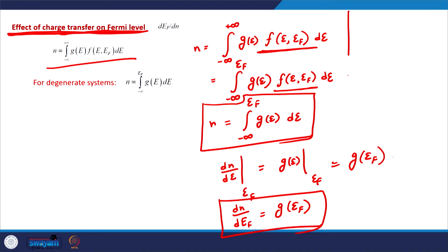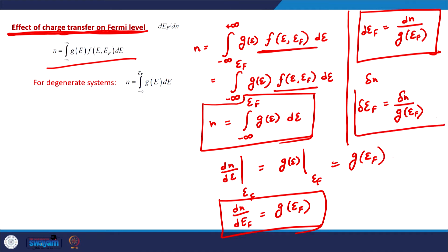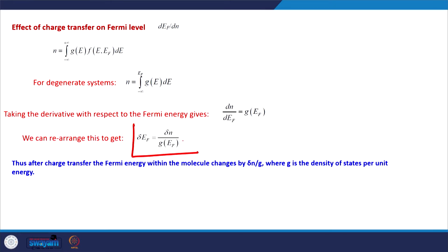This means δEF = δN × 1/G(EF): if there is a transfer of δN electrons from the contact to the molecule, the change in the Fermi level δEF = δN / G(EF). That is the change in the Fermi level just because of the change in the number of electrons on the quantum dot — this does not have the electrostatic component. As you can see, the change in the Fermi level is inversely related to the density of states of the system.